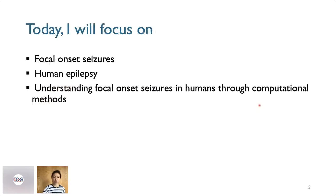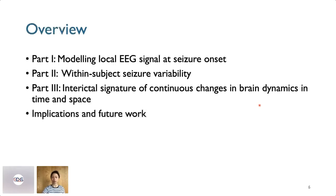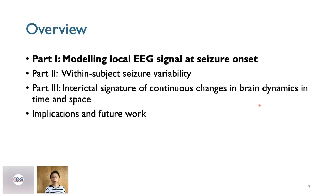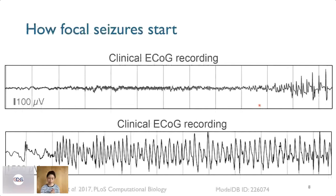Today I will focus on focal onset seizures — seizures that start in a particular location in the brain — and on human epilepsy, trying to understand focal onset seizures through computational methods. In the epilepsy literature, there's an interesting observation: the majority of focal seizures start in one of two ways. My talk has three parts, beginning with the modelling of a local EEG signal.